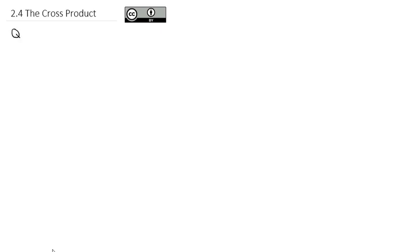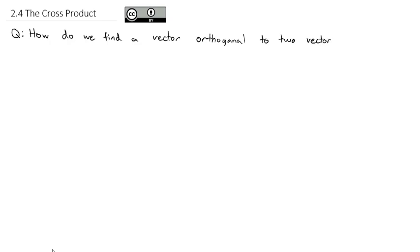The second type of multiplying vectors is called the cross product, and it has a very specific purpose: to answer the question, how do we find a vector orthogonal to two vectors? The cross product is a product where we multiply two vectors together and end up with another vector that is orthogonal or perpendicular to the other two vectors.